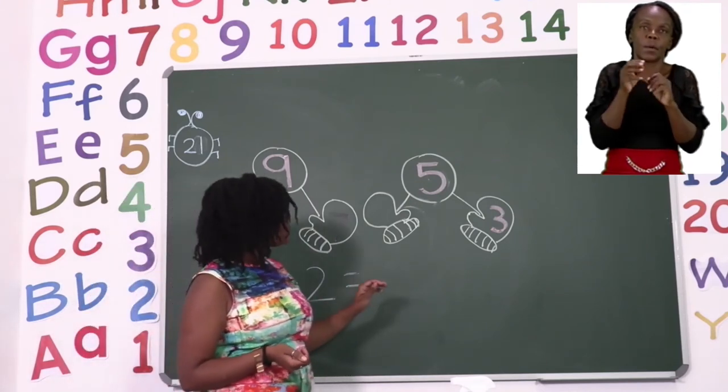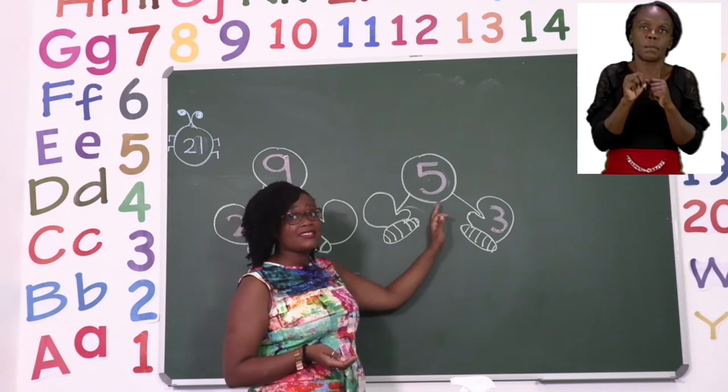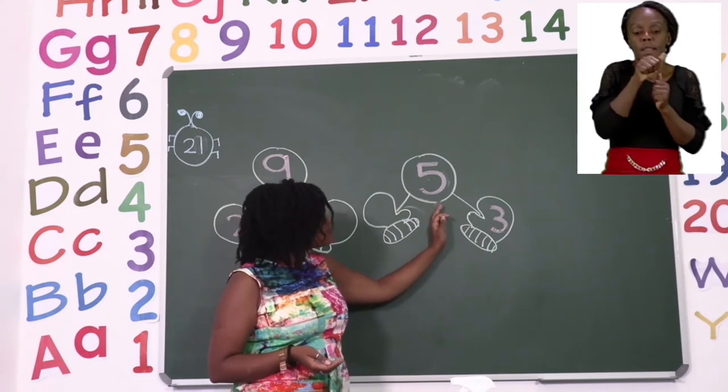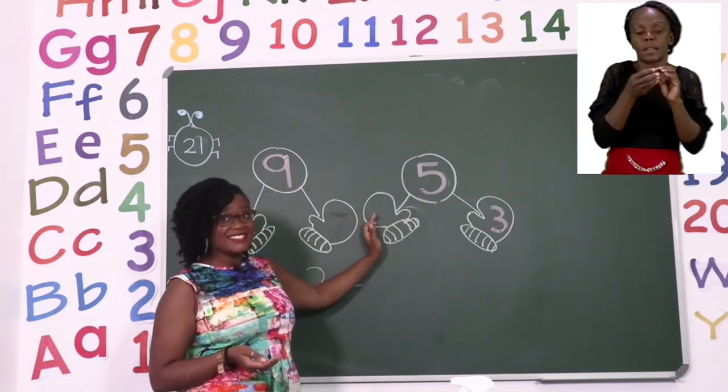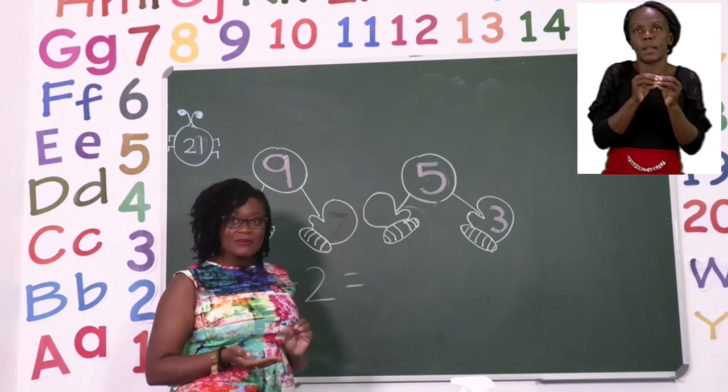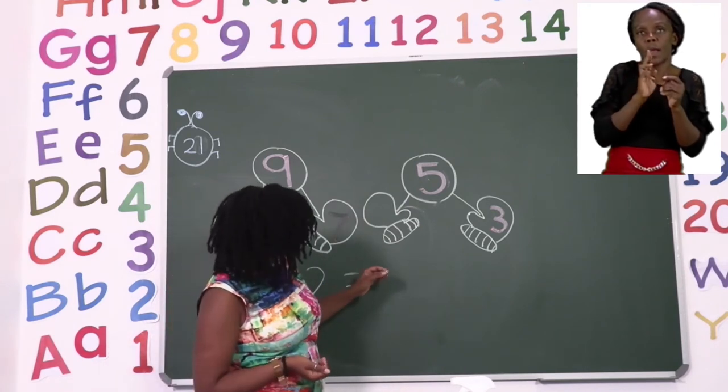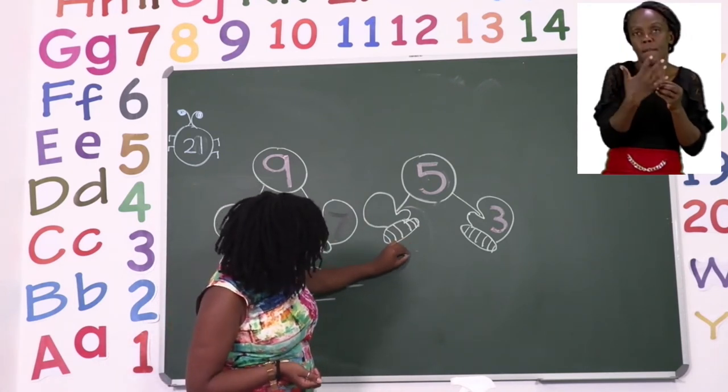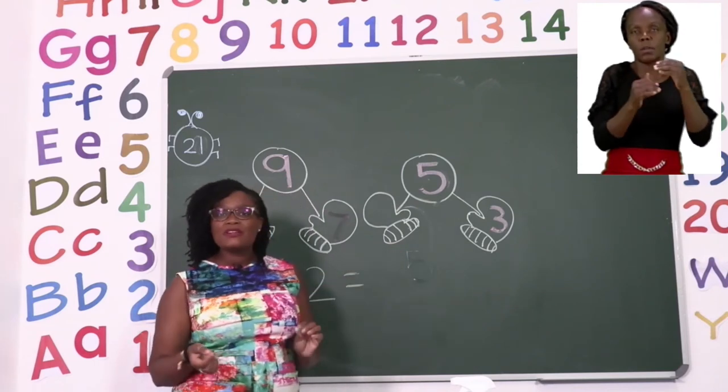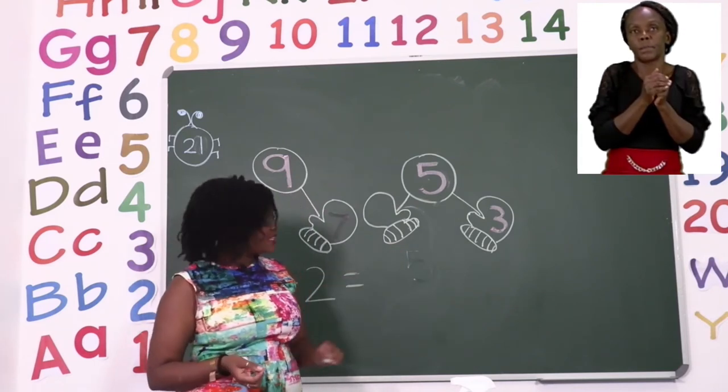Let's go to the next one where we have our answer, but the mitten that's missing is now this side. So the first thing we do is write our answer down, which is five.